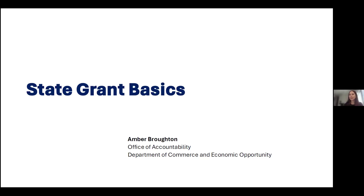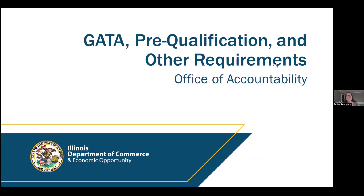My name is Amber Broughton, I am with the Office of Accountability, and I am a Technical Support Manager. I work with our support team helping grantees get ready with grant requirements — whether that's applicants interested in grants or throughout the active grant life cycle — making sure grantees are aware of grant requirements and reporting. I will review the DCEO grant process, the GATA grantee portal, pre-qualification, notice of funding opportunities, and what to expect if you are awarded the grant.